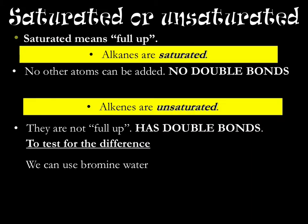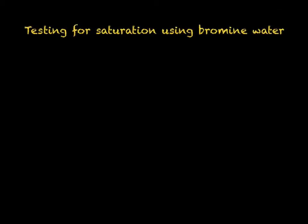You need to be able to test if you have an alkene or an alkane. The easiest way to do so is to test for saturation. Saturated means full up, so alkanes are saturated — the molecule contains no double bonds and the maximum number of atoms are added. Alkenes, on the other hand, are unsaturated: they are not full up and therefore have a double bond. To test for this, we can use bromine water — bromine that has been dissolved into water. Bromine will react with an alkene but will not react with an alkane, due to the presence of the double bond.